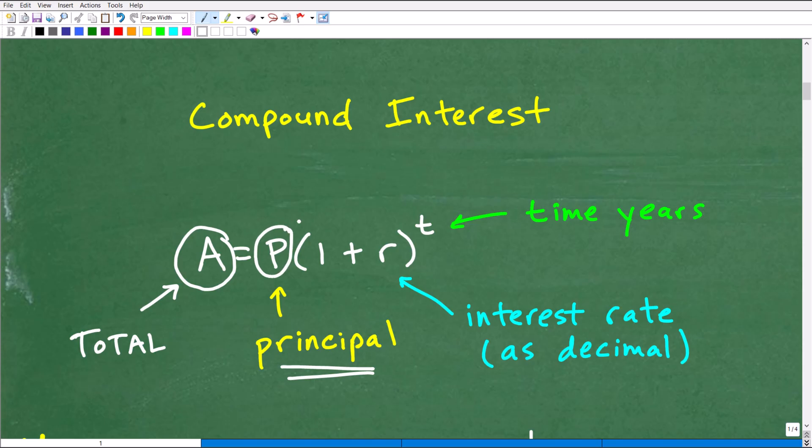That's what P is. So we have parentheses 1 plus r. Now r is the interest rate. In this particular problem, it's 6%. It's the rate of compound interest. And we're going to represent that as a decimal. So that's what r is. And then t is the number of years our investment is going to grow.